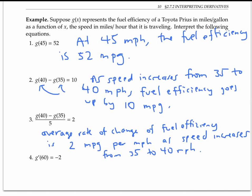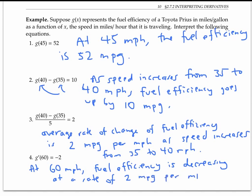On the other hand, when you're going 60 miles per hour, your fuel efficiency is decreasing at a rate of two miles per gallon per mile per hour. So I bet the optimal fuel efficiency here occurs somewhere in between 40 and 60 miles per hour.